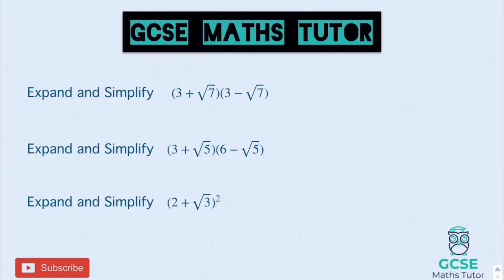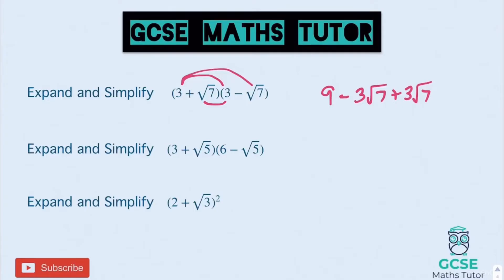Okay, first answer. Root 3 times root 3 is 9. Root 3 times negative root 7 is negative 3 root 7. Root 7 times 3 is positive 3 root 7. And root 7 times negative root 7 is negative root 49, which is negative 7. Tidying up: 9 take away 7 is 2. And negative 3 root 7 add 3 root 7 cancels out to 0. Final answer for that first one is 2.